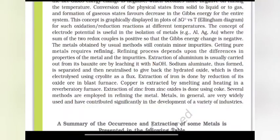Getting pure metals requires refining. Refining process depends on differences in properties of metal and impurities. Extraction of aluminum is usually carried out from its bauxite ore by leaching it with NaOH. Sodium aluminate thus formed is separated and then neutralized to give back the hydrated oxide which is then reduced using cryolite as the flux.